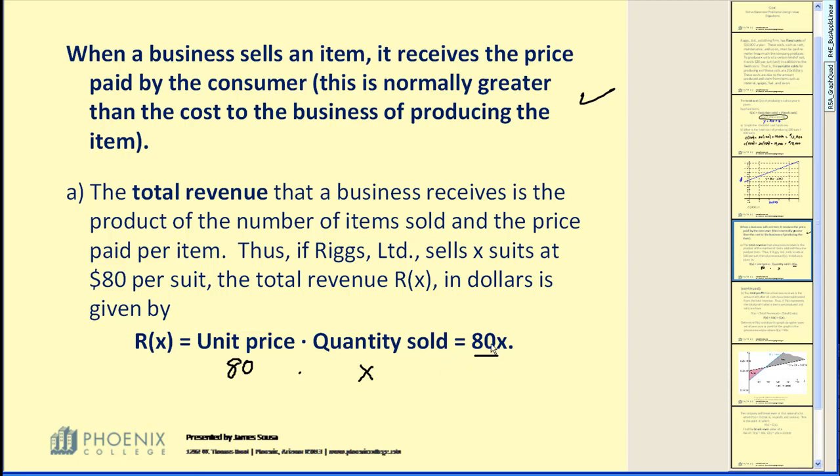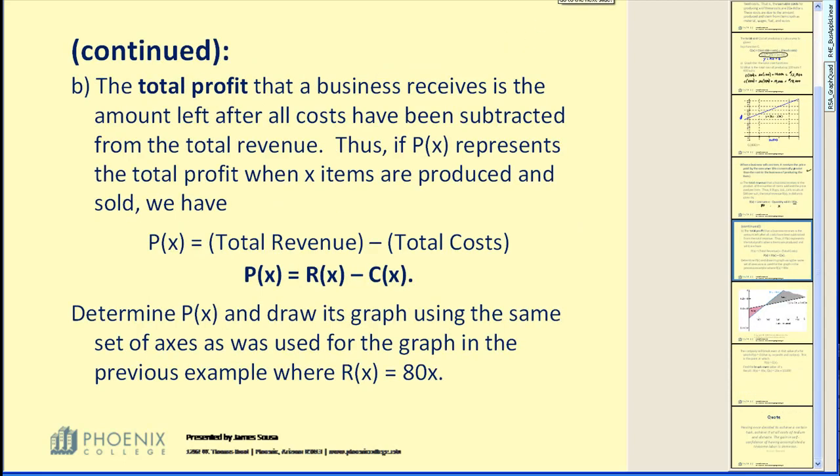Remember, cost is the money going out the door. Revenue is the money coming in the door. The total profit that a business receives is the amount left over after all the costs have been subtracted from the revenue. Thus, if P(x) represents the total profit, where X items are produced and sold, we have the profit, P(x), equals the revenue, R(x), minus cost, C(x).